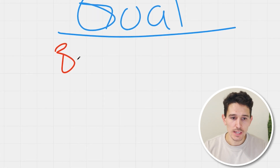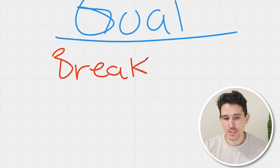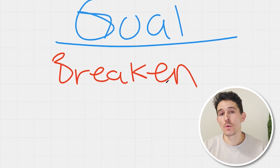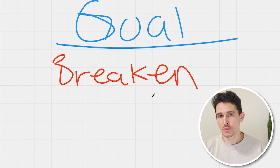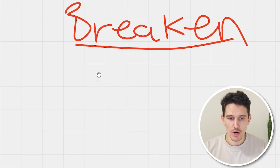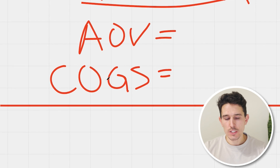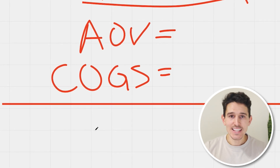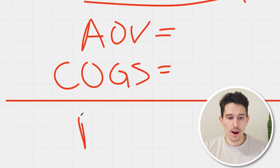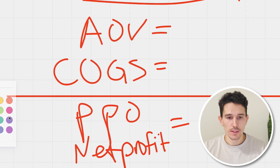The strategy that we like to deploy with every single one of our clients that wants to grow as quickly as possible — we do that through a breakeven strategy. In this strategy, we're going to take our AOV and our cost of goods sold. That is then going to get us a profit per order, or net profit.